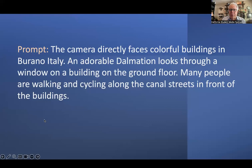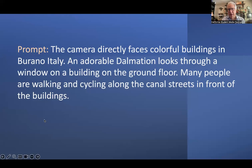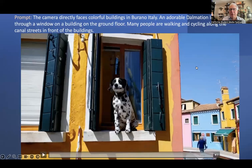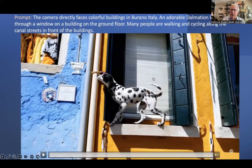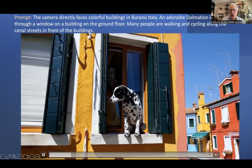Here's what you can do with prompts — this is about two or three weeks old from when I'm taping this. The prompt: 'Camera faces colorful buildings. You can see it in Burano, Italy. An adorable Dalmatian looks through a window on the ground floor,' et cetera. It gave those pictures to Sora, and Sora produced a beautiful, colorful result. What's amazing is this is not a prompt for a picture — this is a prompt for a video. Knowing how to build a prompt is a skill that will go very, very far.